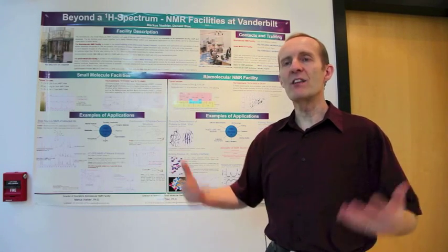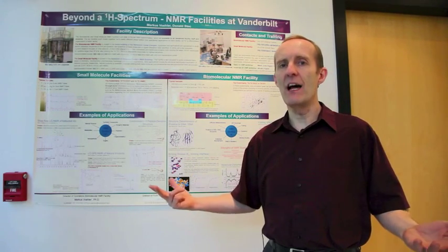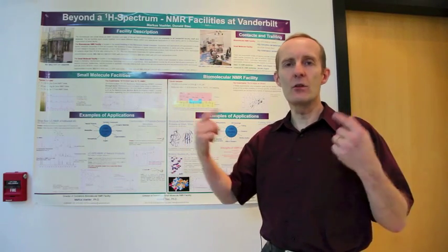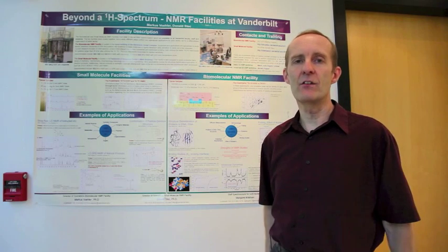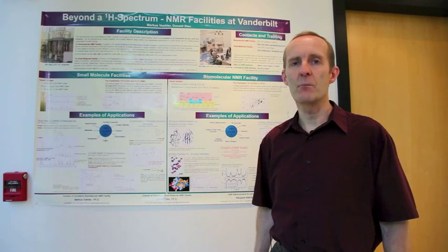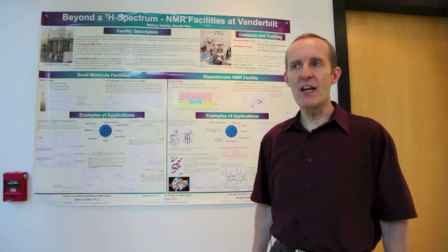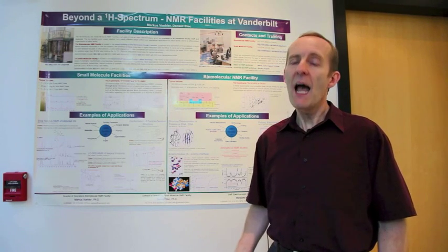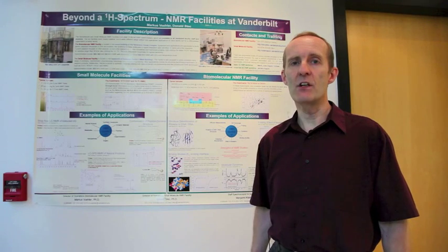Because in nature these isotopes have a very, very low abundance, we need to get them up to 100% in order to get all our NMR signals. That means the sample preparation is often very involving and in times can be very costly.